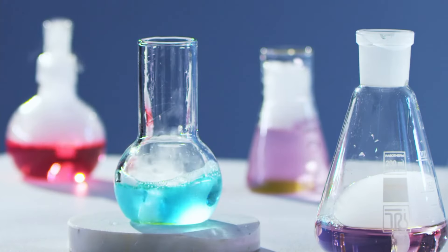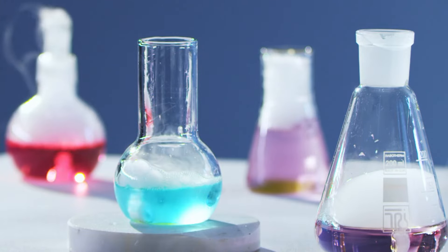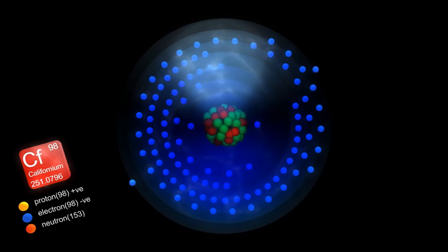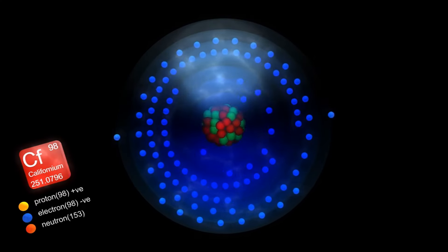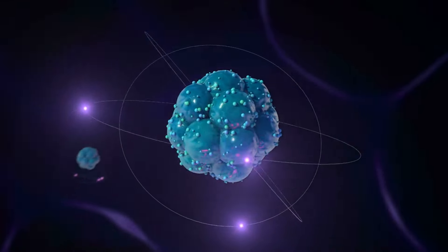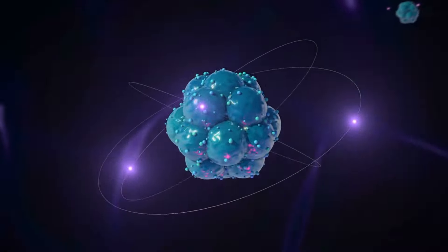When exposed to air, it tarnishes gradually and is highly reactive, being readily attacked by steam and acids. However, Californium-3 is the stable ion in aqueous solutions and remains unaffected by oxidation or reduction processes.